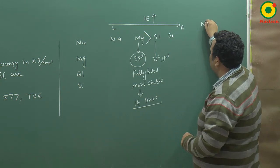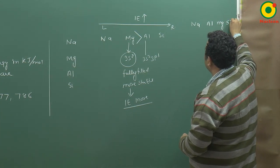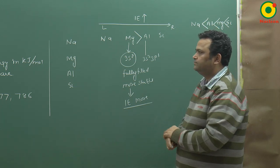So what is the order? Sodium, then aluminium, then magnesium, then silicon. This is the order.